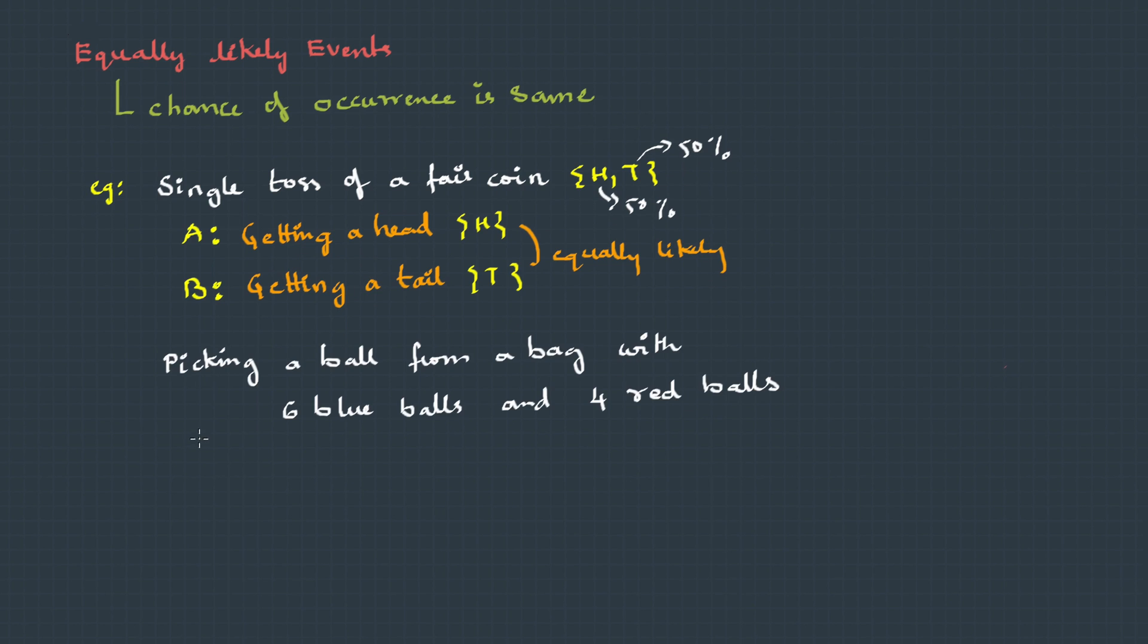Sometimes this logic may not work for every event. So something like, here we have an experiment picking a ball from a bag with six blue balls and four red balls. Let's define an event A as the ball we picked to be blue and event B is the ball we picked is red. If you carefully observe, we have six blue balls, but there are only four red balls.